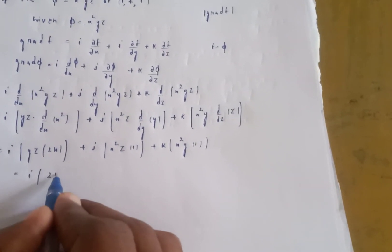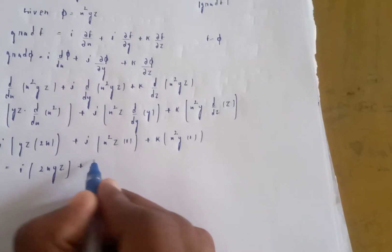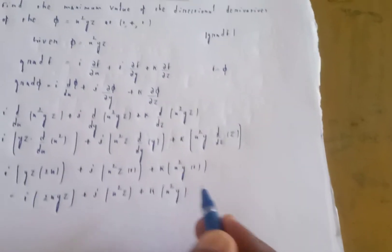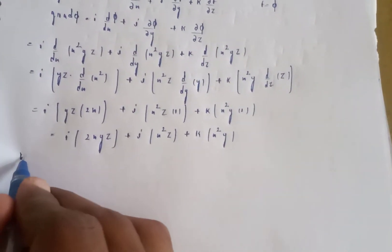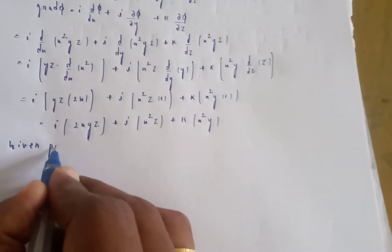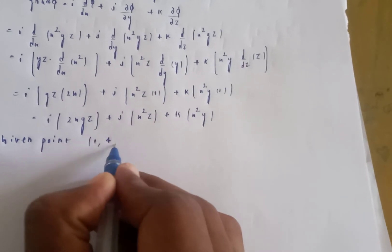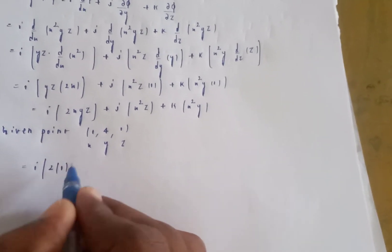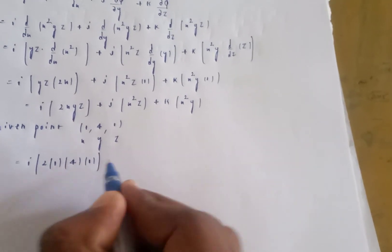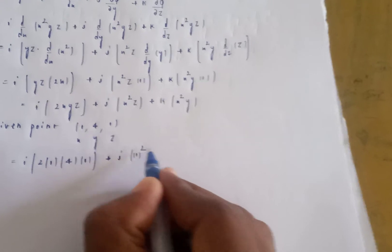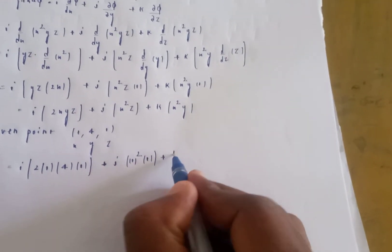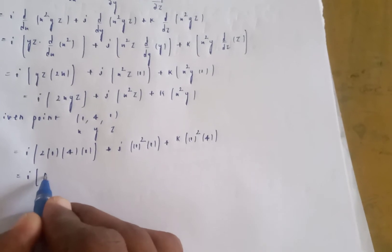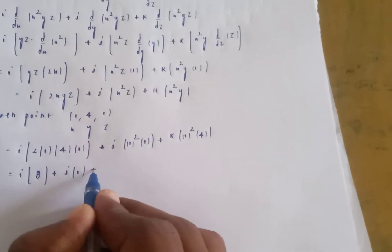Now substitute the given point (1, 4, 1): i of 2 times 1 times 4 times 1 equals 8, plus j of 1 squared times 1 equals 1, plus k of 1 squared times 4 equals 4. So gradient phi at (1,4,1) equals 8i + j + 4k.